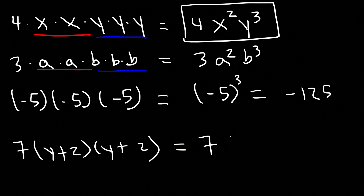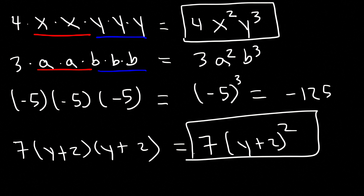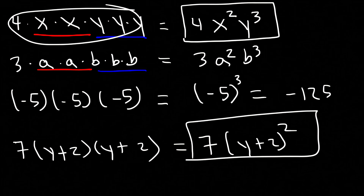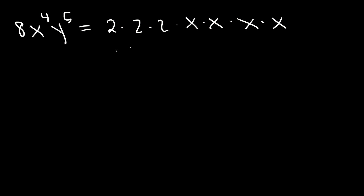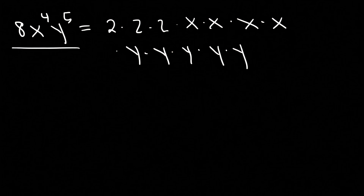In the last example, we have 7 and 2 (y plus 2) terms, so it's 7(y plus 2) squared. Now you know how to take an expression in its expanded form and write it as a single monomial. Sometimes you may have problems where you have to work it out in reverse — go ahead and expand this monomial completely. So 8 can be written as 2 times 2 times 2; x to the 4th is x times x times x times x; and y to the 5th is 5 y variables multiplied together. So that expands 8x to the 4th y to the 5th.